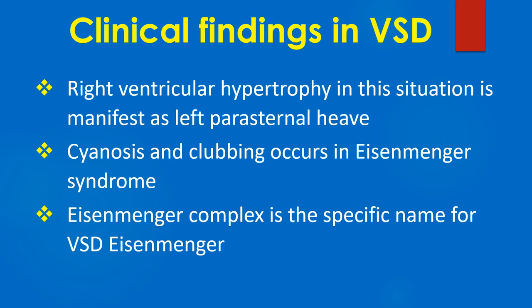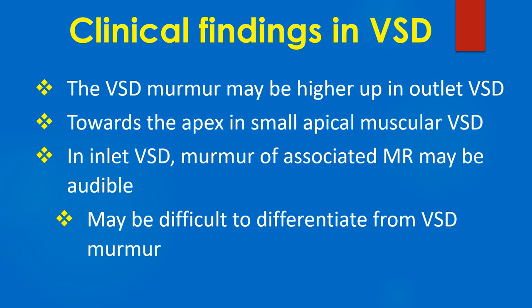Cyanosis and clubbing may occur in Eisenmenger syndrome. Eisenmenger complex is the specific name for VSD with Eisenmenger physiology. The VSD murmur may be heard higher up in outlet VSD and towards the apex in small apical muscular VSD. In inlet VSD, the murmur of associated mitral regurgitation may be audible but may be difficult to differentiate from VSD murmur.